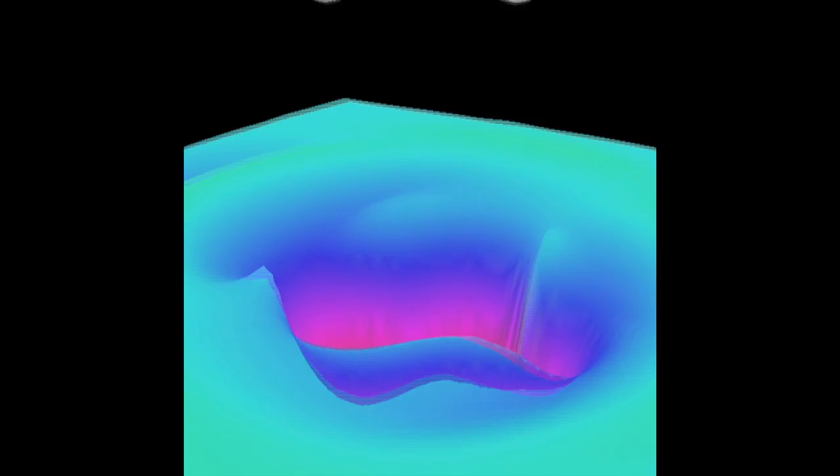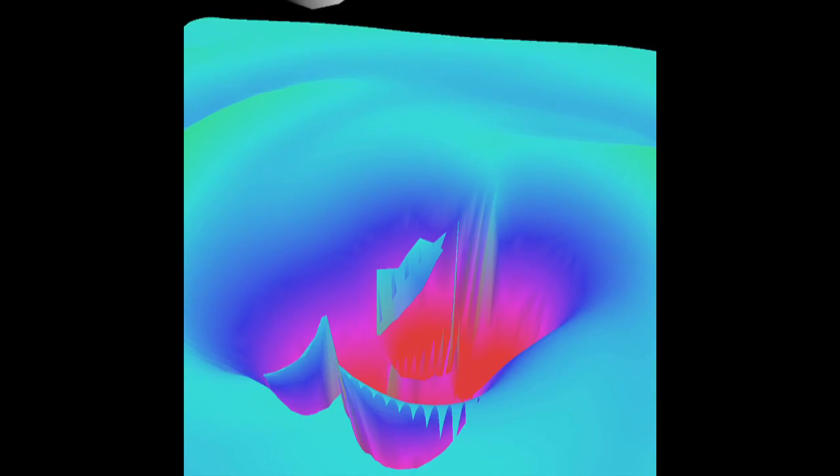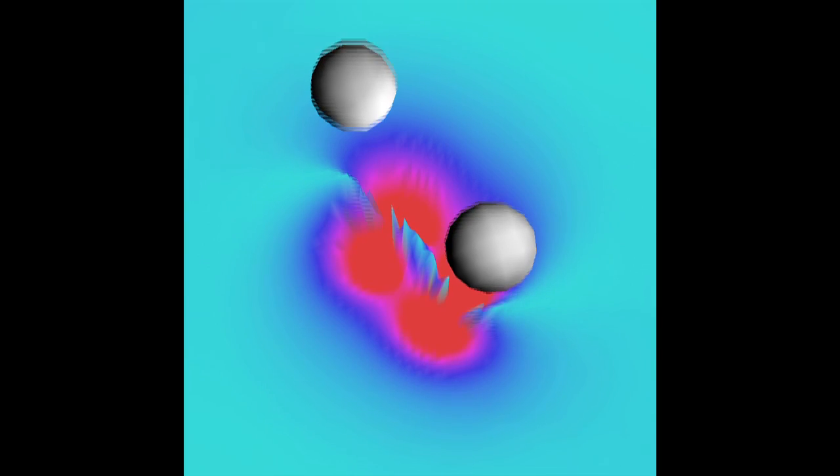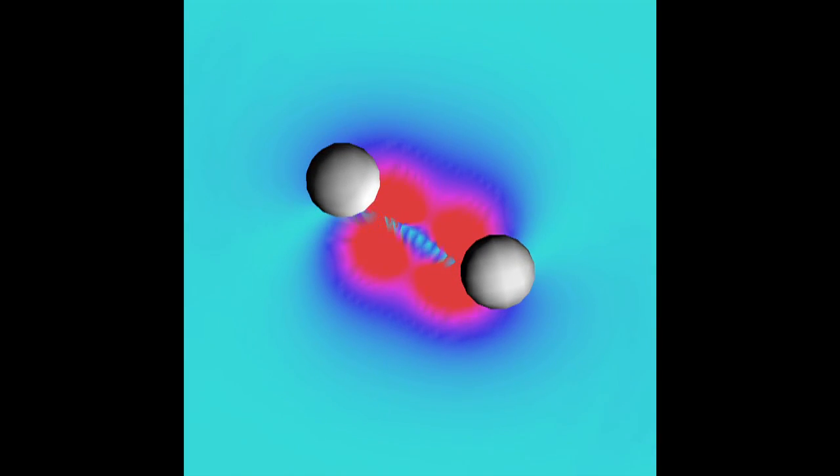Here we see a simulation of two black holes orbiting around each other. The black hole binaries are releasing energy in the form of gravitational waves. This energy loss forces the two black holes to get closer and closer together.